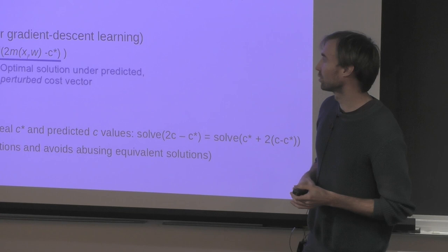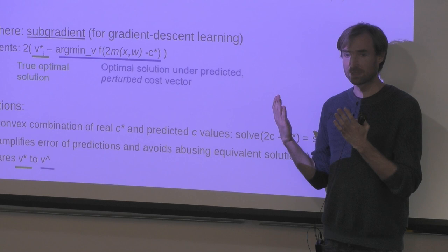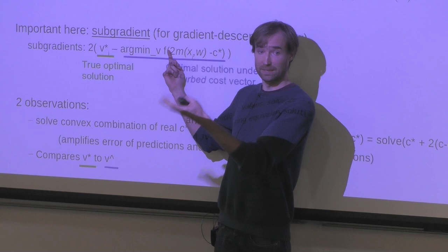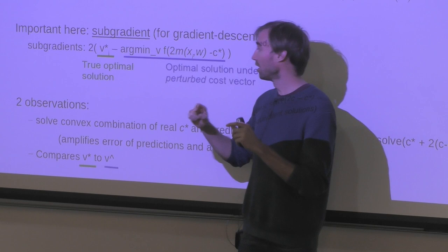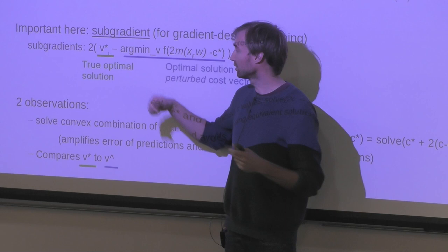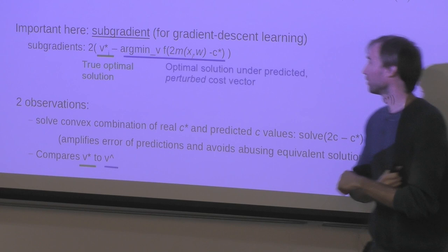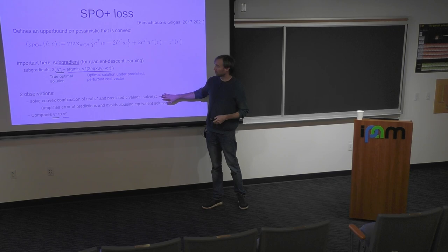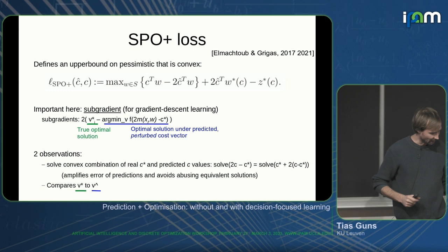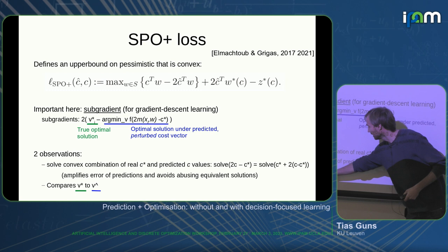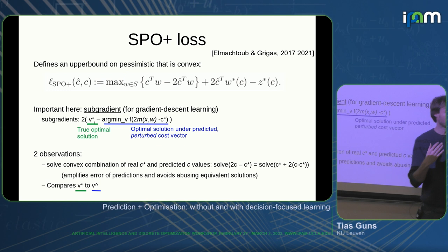It's super elegant. For binary variables, calling the solver with perturbed predictions will either give the same value — zero, nothing to backpropagate — or it should be a zero but is a one, giving minus one, or should be a one but is a zero, giving a one. A very clear interpretation. The subgradient compares the optimal solution V-star to the predicted solution under a slight perturbation — it's a convex combination of the true cost and the predicted cost.